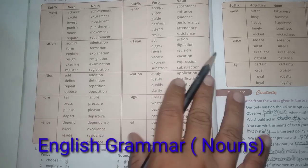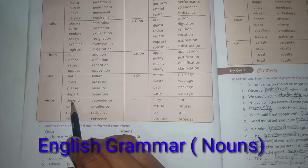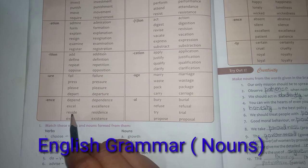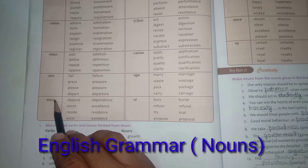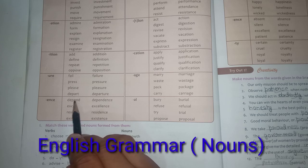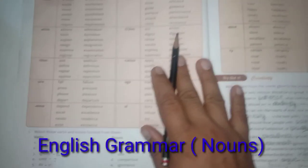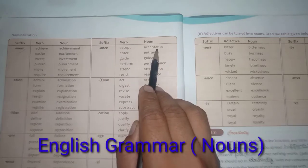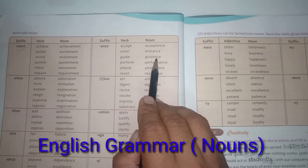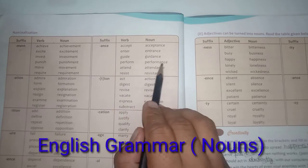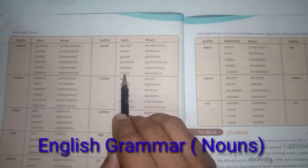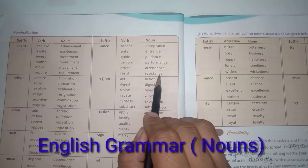Adding -ence as a suffix: depend → dependence, excel → excellence, reside → residence, exist → existence. Adding -ance as a suffix: accept → acceptance, enter → entrance, guide → guidance, perform → performance, attend → attendance, resist → resistance.